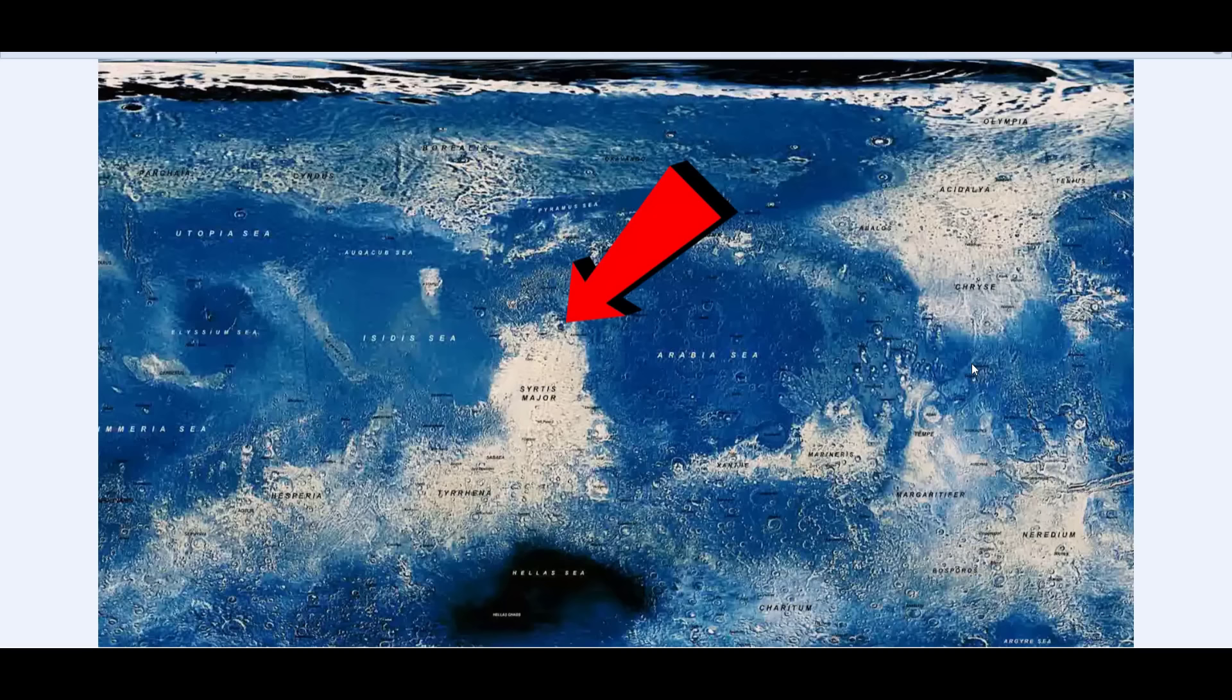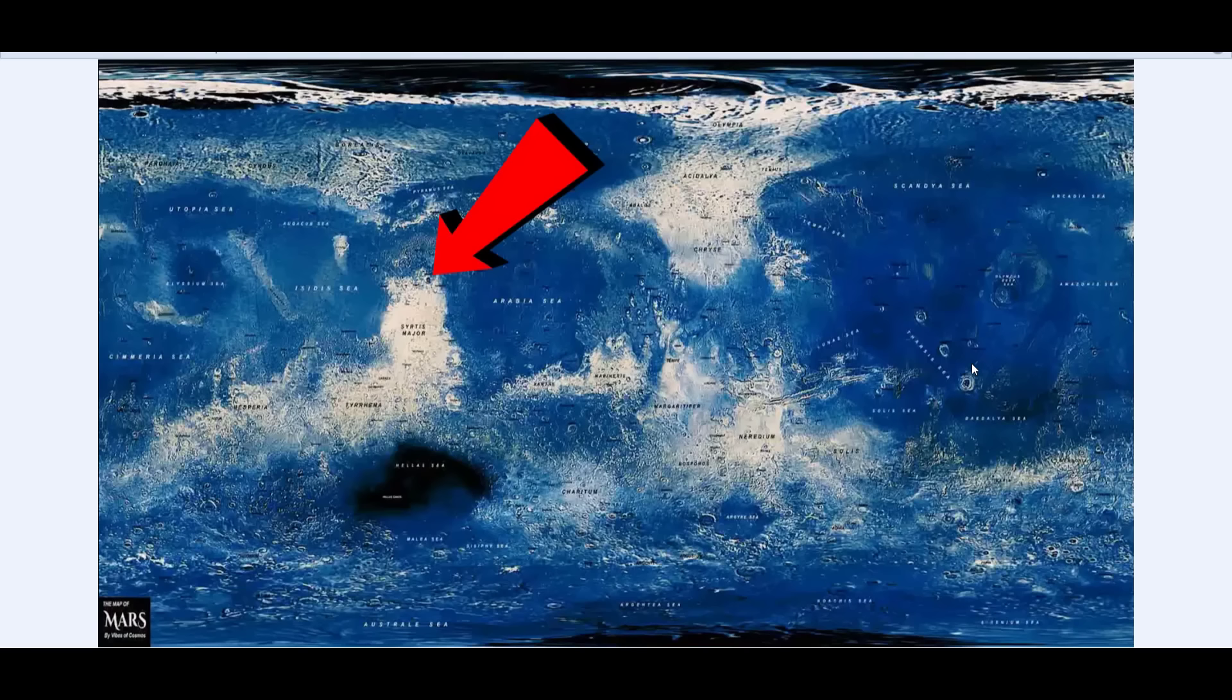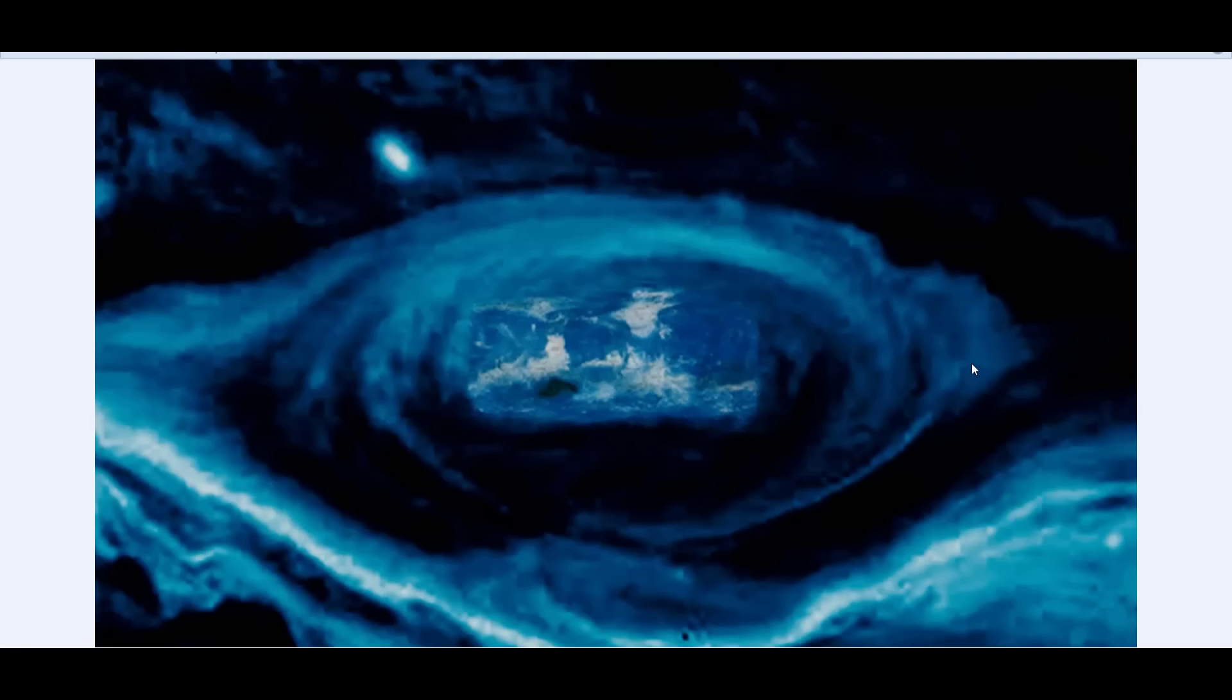The white and the blue continues in a straight line. There's more white and more blue. In the book by Vibes of Cosmos, when you zoom out, the next layer of electromagnetic field is Jupiter.